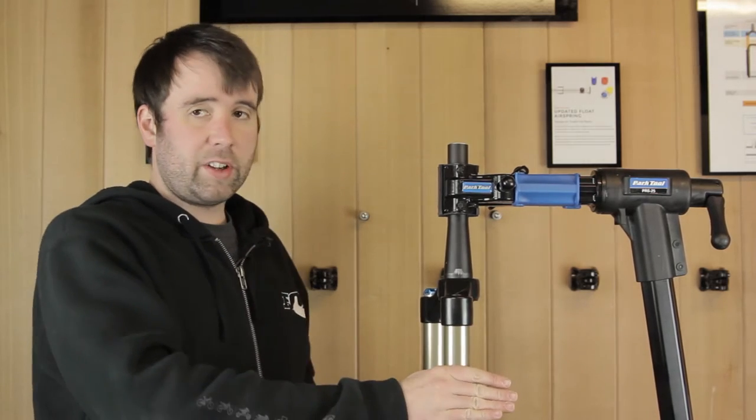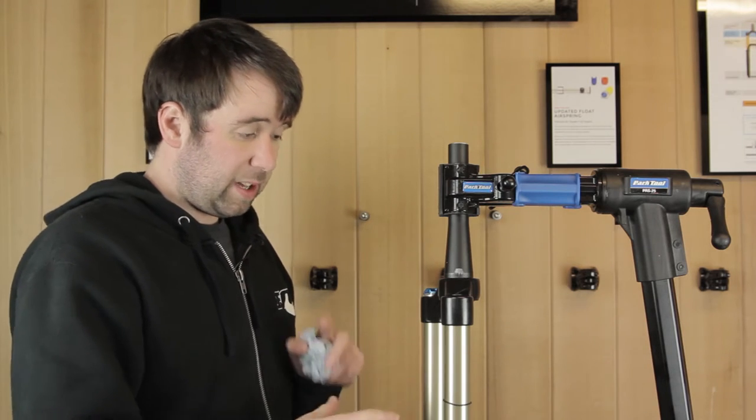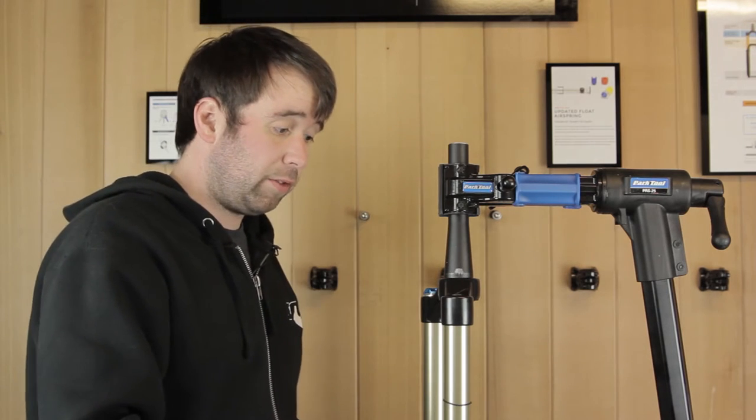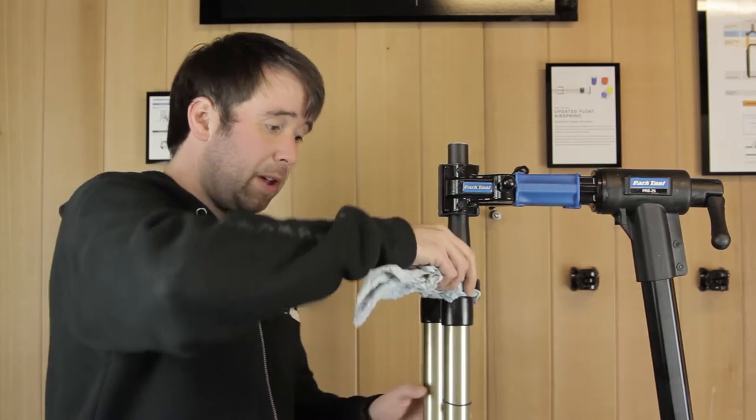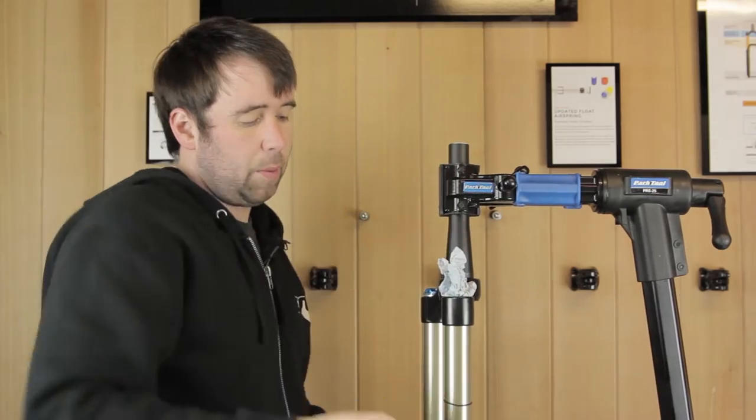On top of the air piece and inside you have got some float fluid. Now if the fork is off your bike you can easily tip it upside down and empty the float fluid, or get a bit of soft paper towel, just put it in the top of the stanchion to stop it from coming out.